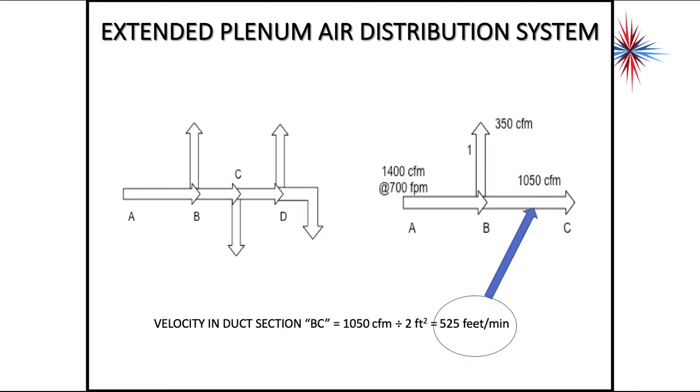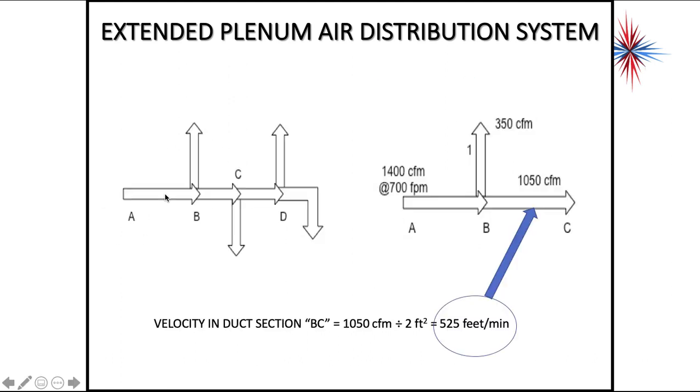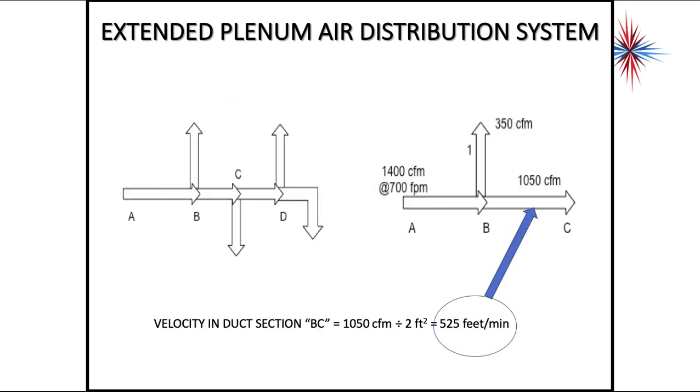So let's jump back here. We have my duct sections here. We have A to B, B to C, C to D, and then after D, we basically just have that single register left. So between B and C, which is this area right here, that's what this is showing. I'm losing 1,400 minus 350, so I only have left in this area 1,050. I know it's 525 feet per minute.